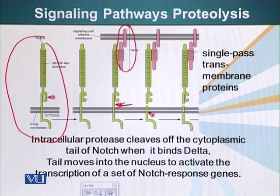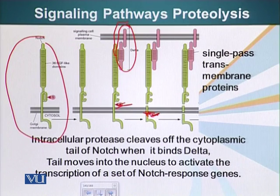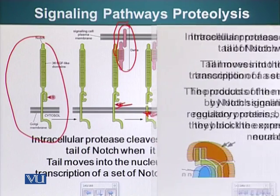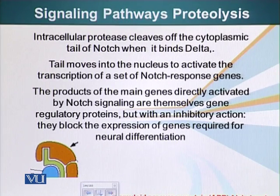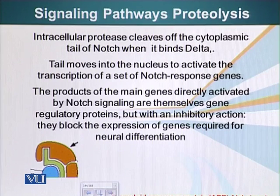When the third cleavage of Notch occurs, a piece of Notch is released from the cytoplasm and moves to the nucleus. Once in the nucleus, it binds other factors, recruits transcription factors, and causes expression of genes that block that cell from undergoing neuronal differentiation.